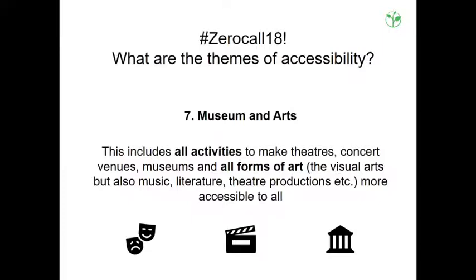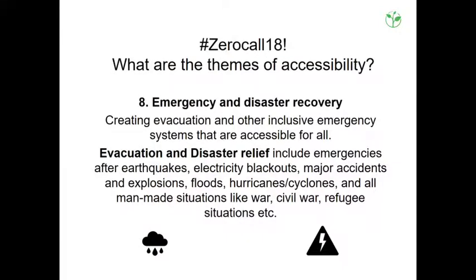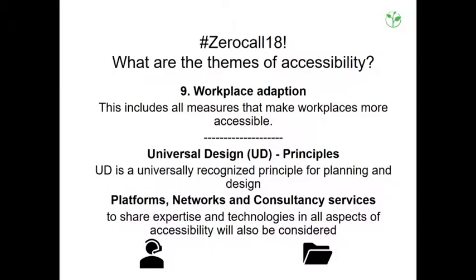The third theme is museums and arts. People with disabilities also have cultural needs — not only visual arts but opera, theatre, and literature. What kind of accessibility solutions exist for people who run a museum, theatre, or opera house? A fourth important theme is emergency and disaster recovery: what happens to people with disabilities in emergencies — who evacuates them, how are wheelchair users and people with visual or hearing impairments treated in natural or man-made disasters?